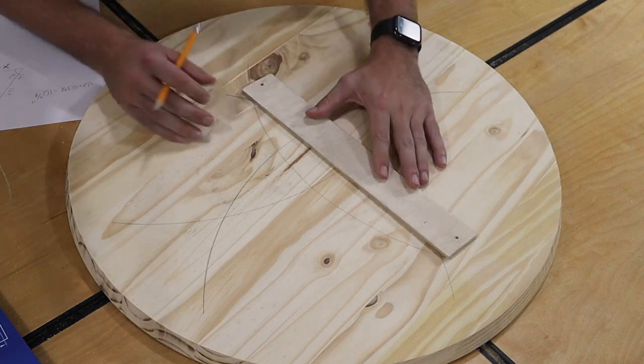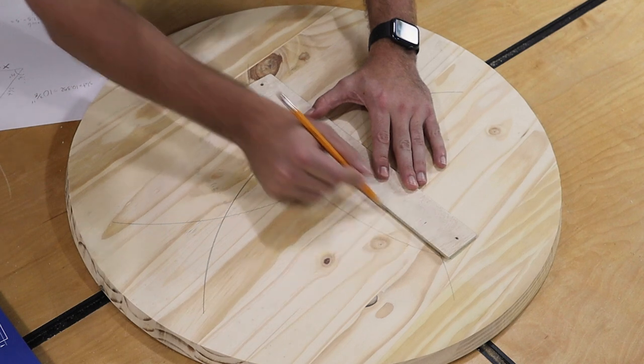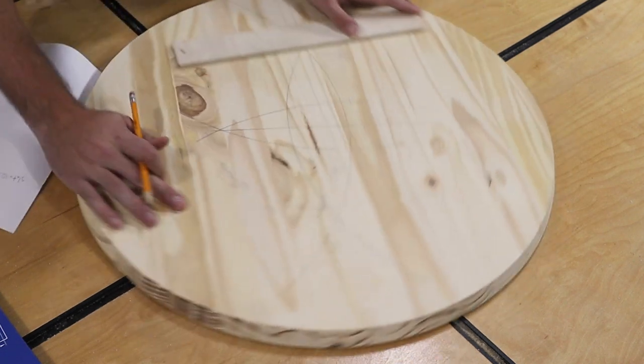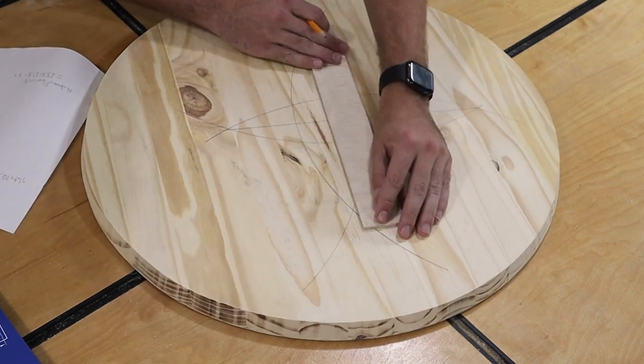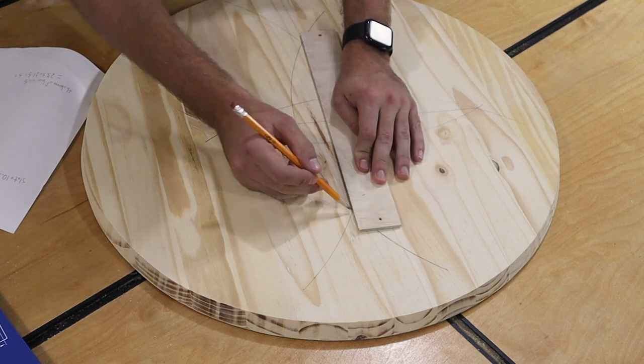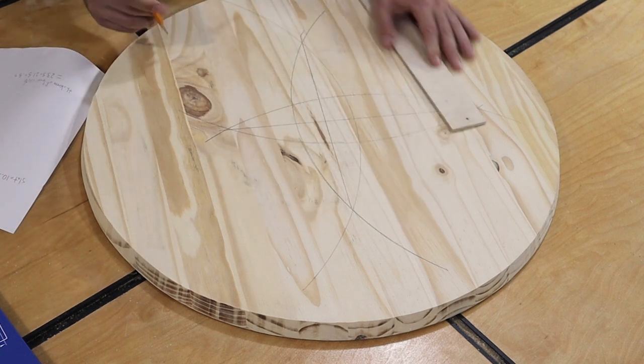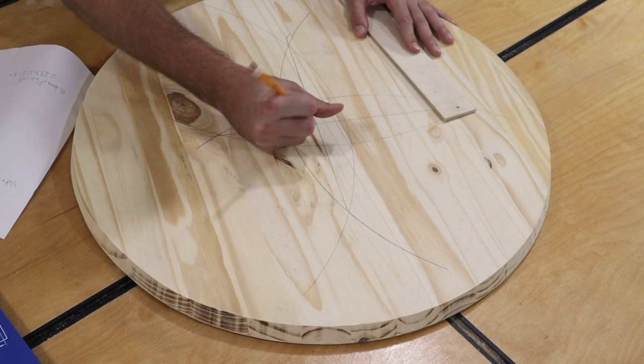Now, with these marked as a center, I can draw a line for the intersections of each of these two arcs, like that, and right here is the center of the circle. Just that easy.